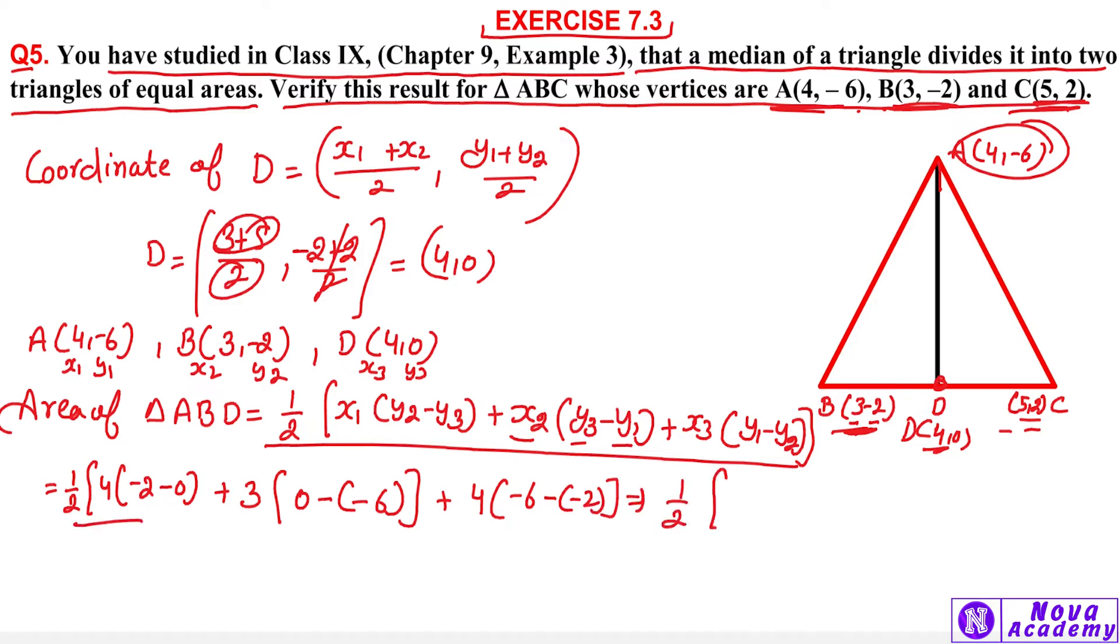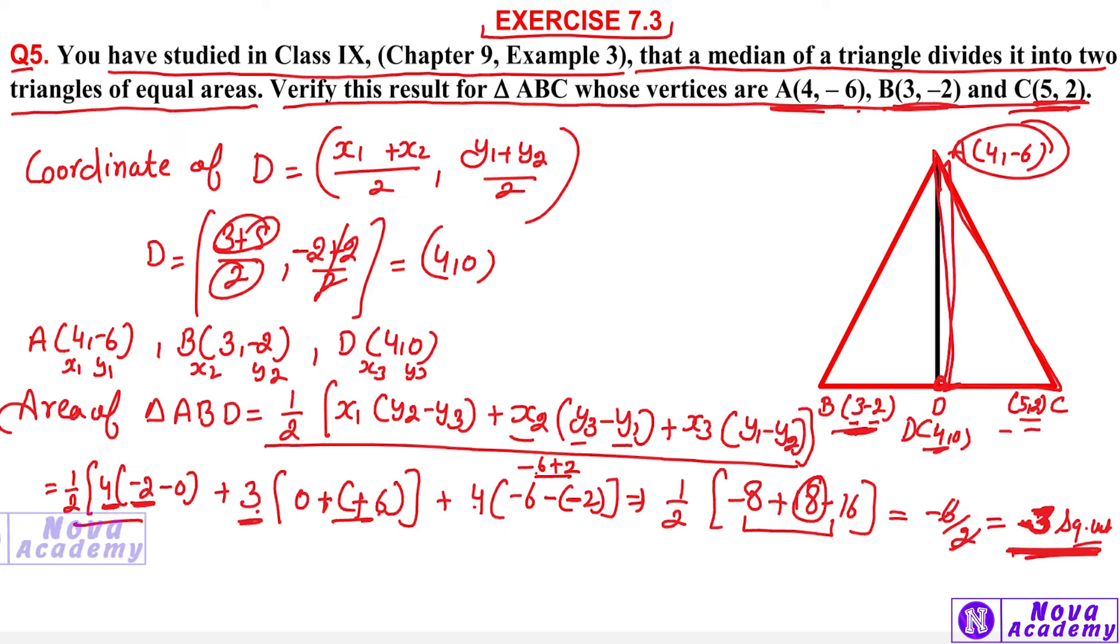1 upon 2, 4 into -2 is -8, plus 3 into -6 is -18, minus 4 into 4 is -16. That gives -8 plus 18 minus 24, which is -6 upon 2, which equals -3 square units. When we calculate area, the area is always positive, so this is 3 square units.